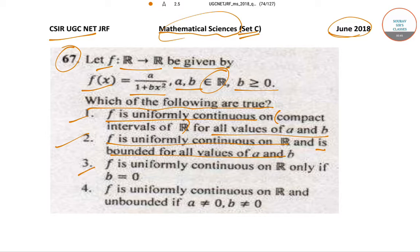Option 3: f is uniformly continuous on R only if b = 0. And option 4: f is uniformly continuous on R and unbounded if a ≠ 0 and b ≠ 0.